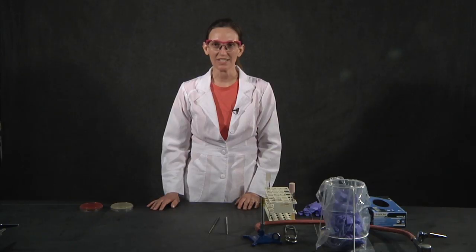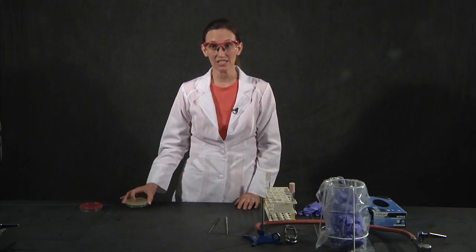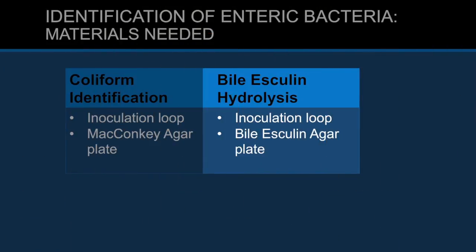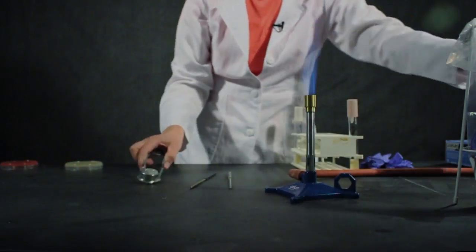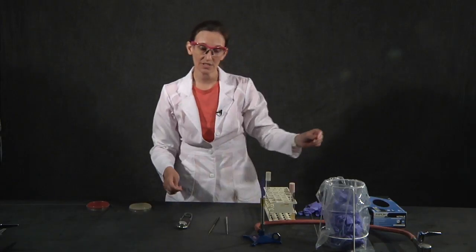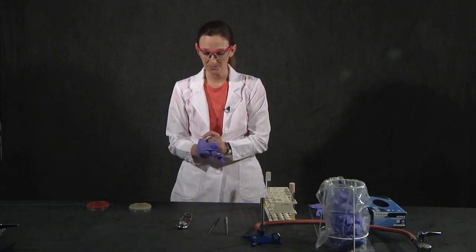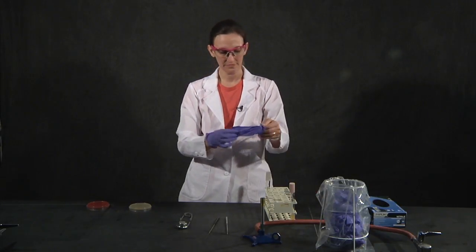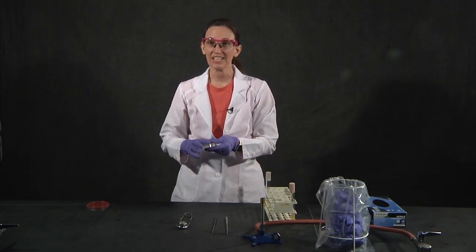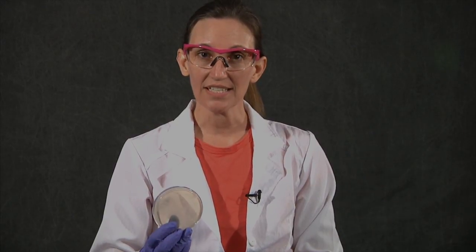The inoculation techniques for testing the enteric bacteria — the two tests are bile esculin and MacConkey agar. It's a standard inoculation; you're going to use a loop on the agar surface. We need to sterilize the loop, and go ahead and use your working stock to take the inoculum — just don't take too much. We're going to start with the bile esculin agar, and the technique for inoculating this is going to be a straight streak. We want a heavy line of growth right down the middle.